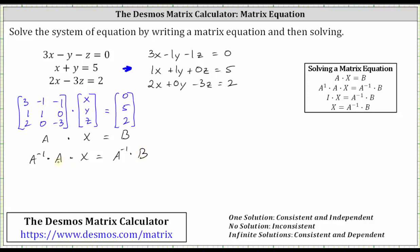A inverse times A is equal to the identity matrix, identified by capital I, giving us I times X equals A inverse times B. I times X is equal to X, giving us X equals A inverse times B.